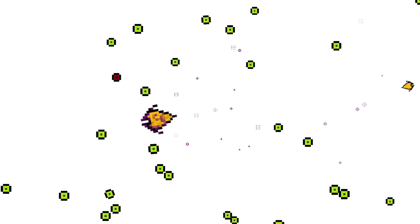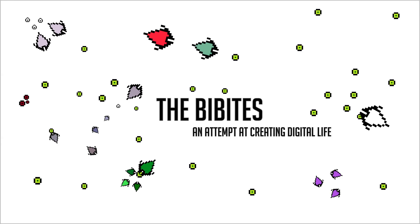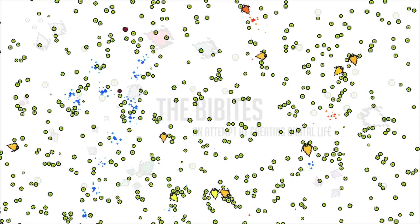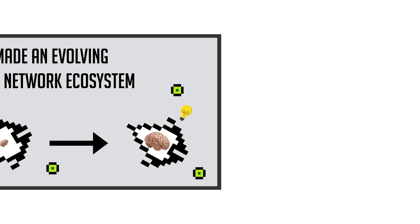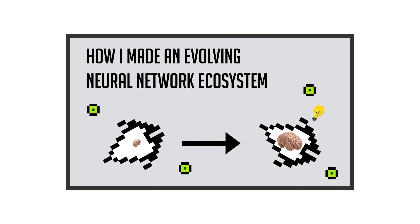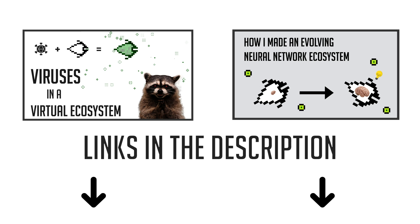Welcome everyone. Last time, a while ago I should admit, we saw how I added viruses to the Bibits simulation. You don't have to, but it could be a good idea to watch that first if you haven't. The Bibits is an artificial life project where I try to create living digital beings through the process of evolution. If you have no idea what that means or how it's done, I strongly recommend watching my introduction video first. Both links are in the description.